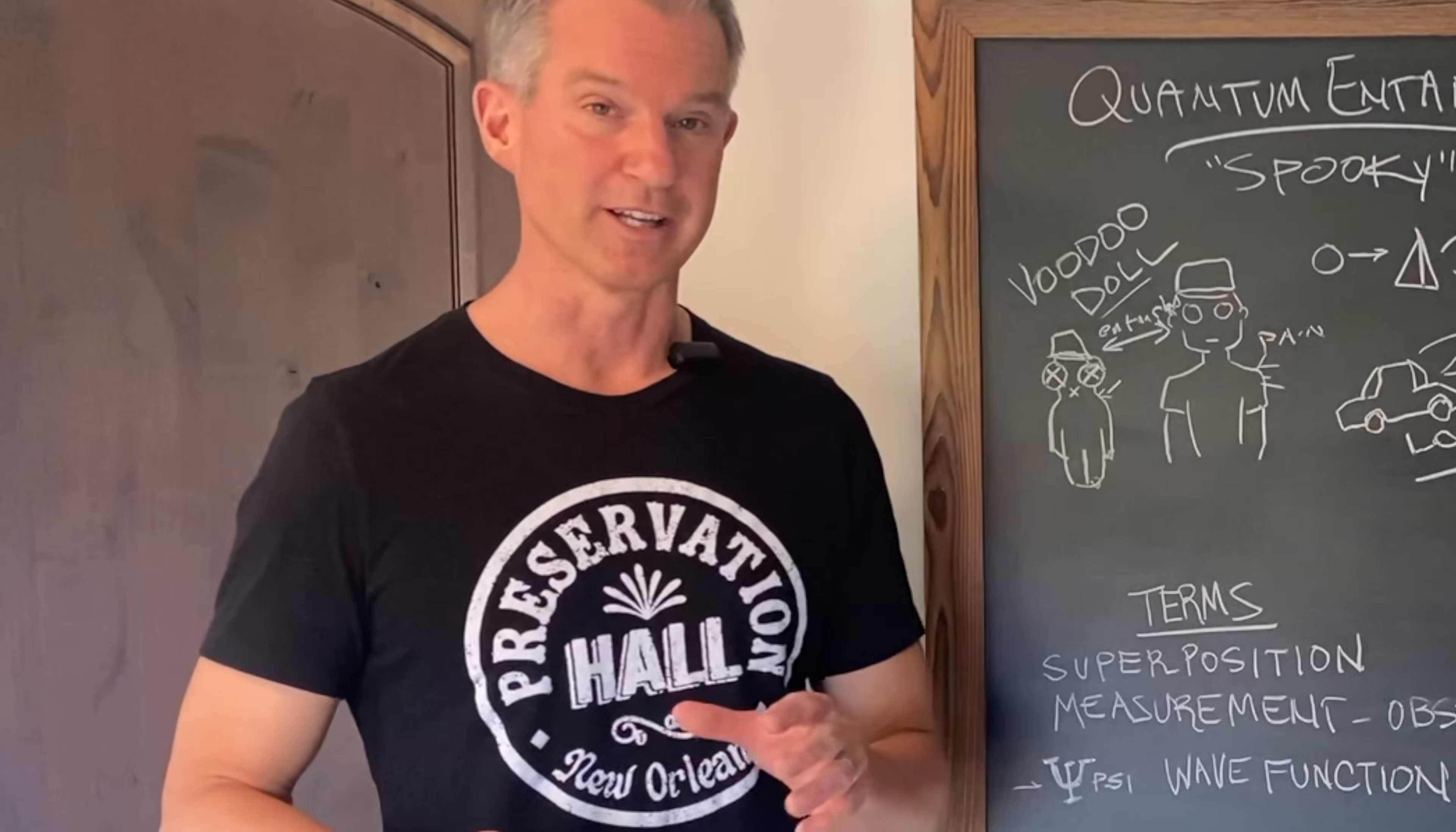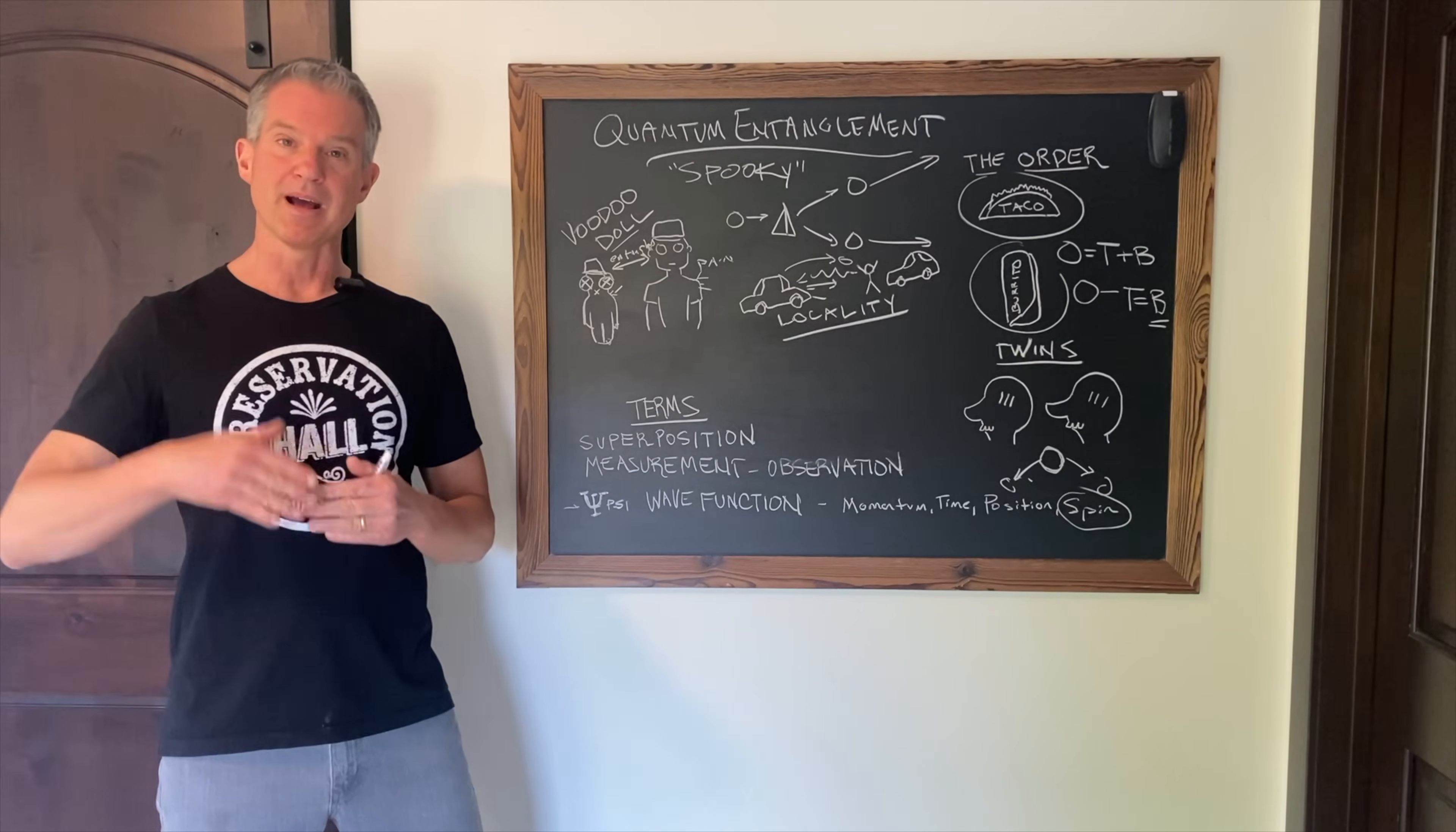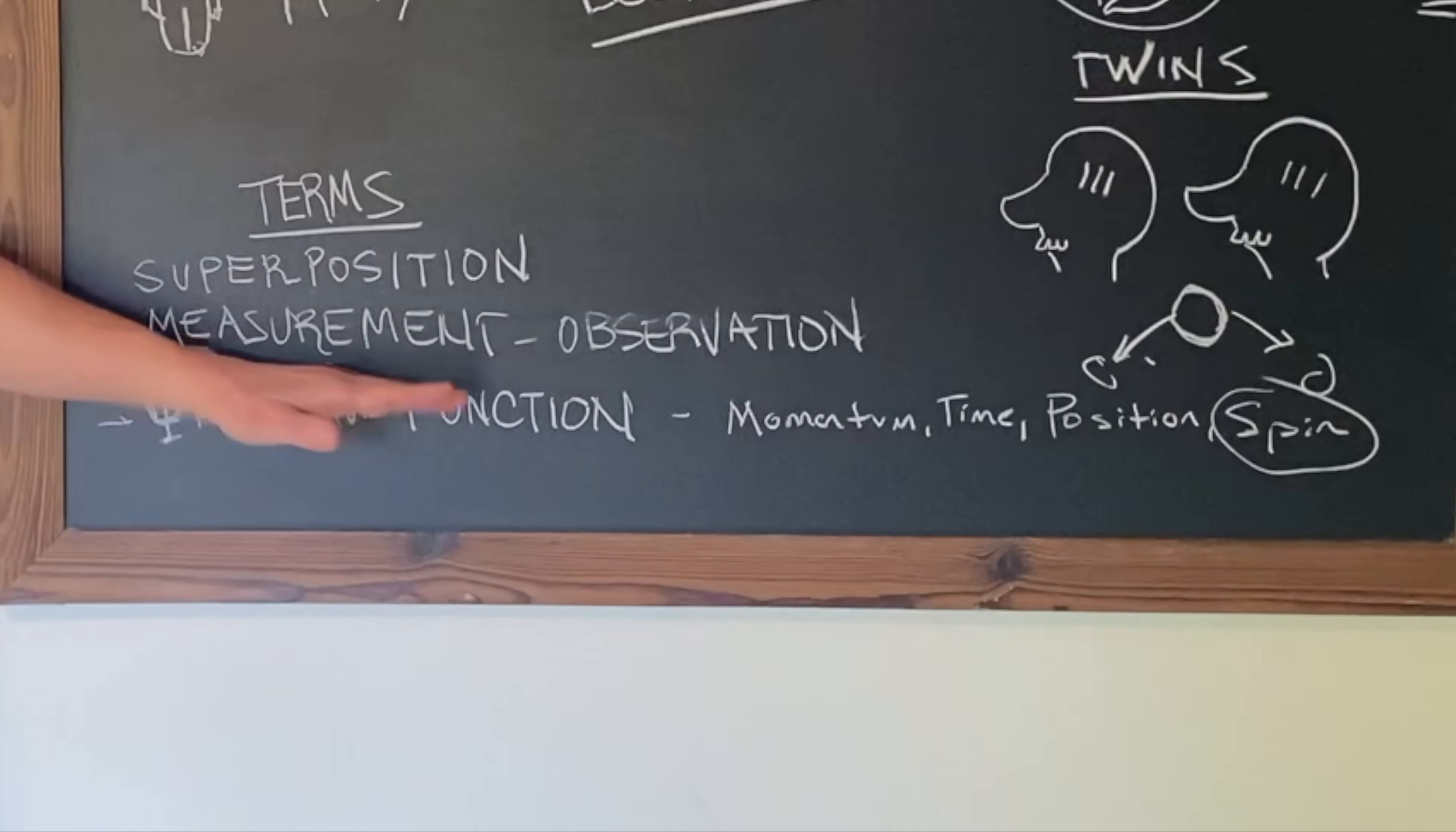Now you might want to stop there. And you're well within your rights to do that. Because if we go a little deeper, I'm going to have to introduce terms that frankly sound so tedious they're going to make your hair hurt. One of those is the wave function. A wave function is a mathematical formula that describes everything we can know about a particle. So a quantum particle, a very tiny particle, has a momentum, time, position, and spin, all of which are taken into account in its wave function.